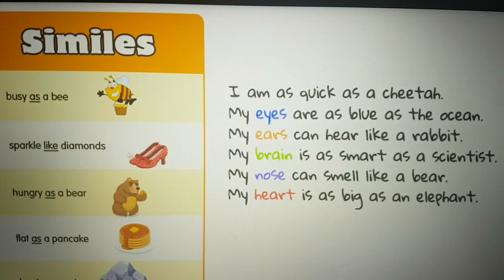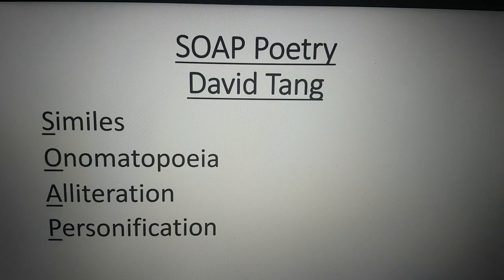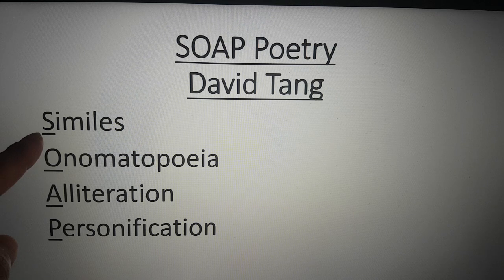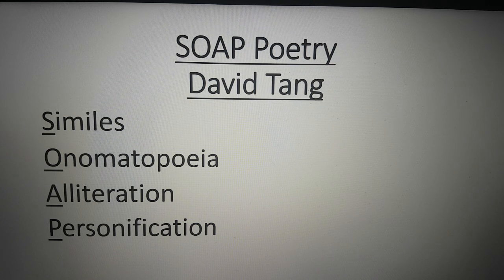So if we go back to the first page, remember: S is for similes, O is for onomatopoeia, A is for alliteration, and P is for personification. Good luck, students.